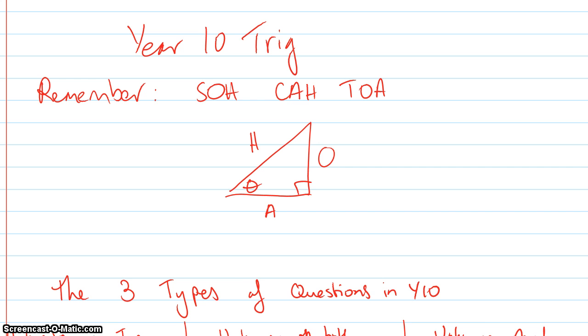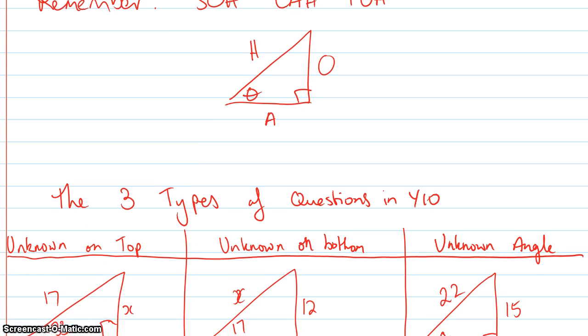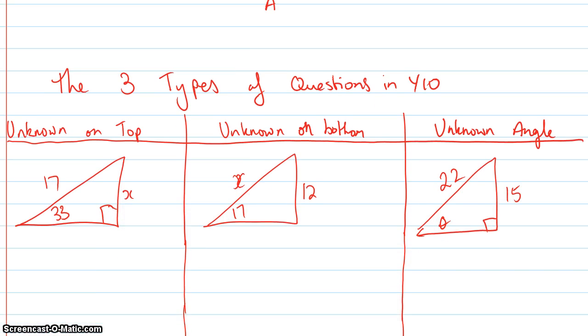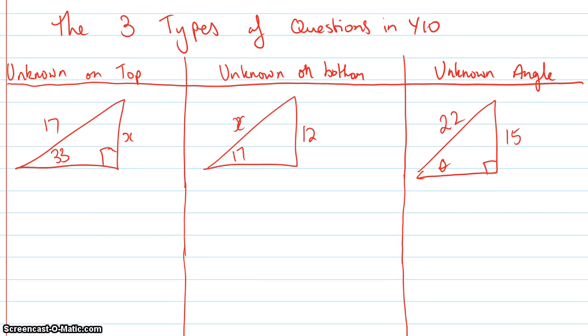The three types of questions you're going to see in Year 10 are no different from Year 9, but sometimes there's going to be an unknown on the top of a fraction, sometimes on the bottom of a fraction, and then the other time you're going to have an unknown angle. So let me go through each of them and show you what I mean. I actually won't find the answer—I'll just set up the equation and then you can go from there. In the next video I'll show you how to use your calculator for these because the CAS calculator is a little bit different.